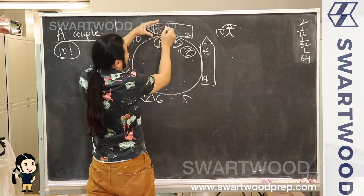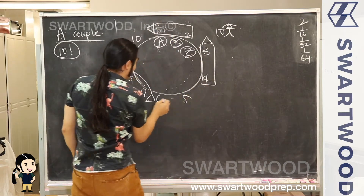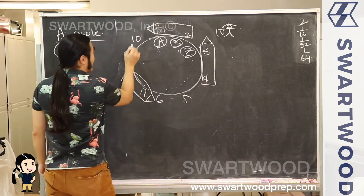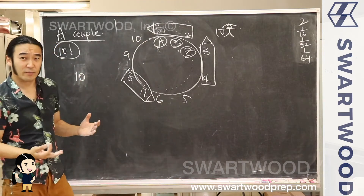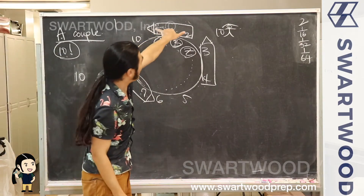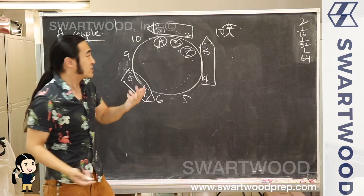We could do one, two, three, four, five, six, seven, eight, nine, ten. No big deal. But once we place that down, we still don't know what that block looks like, because you have the couple — let's say the couple is A and B.